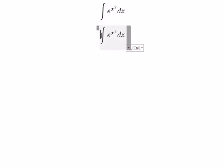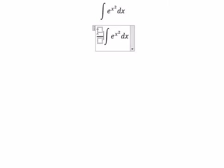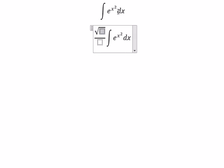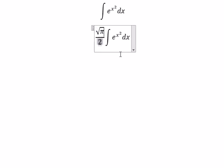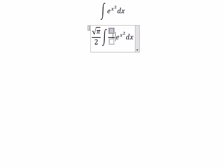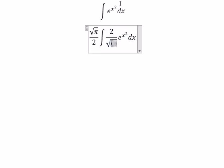First, we need to multiply with square root of p over 2. So in here, we need to have 2 over the square root of p.